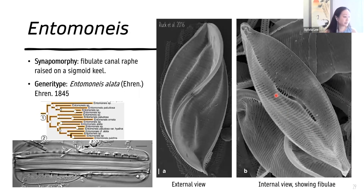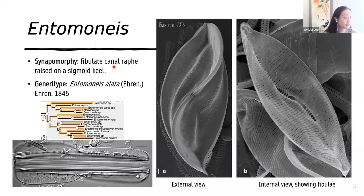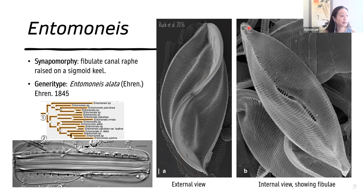Entomoneis was a monophyletic group, and the synapomorphy for this genus is that the canal raphe is raised on a sigmoid keel. You can see that very well in these SEM photos. The sigmoid raphe canal is shown here on the external view of the valve, and on the internal view you can see the raphe slit through this opening, with the bars being the fibulae.